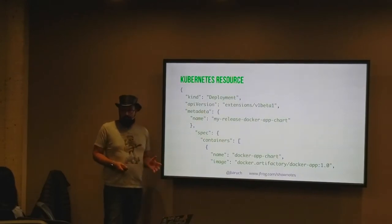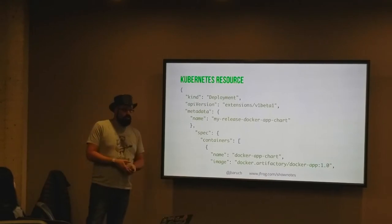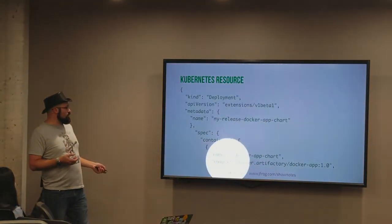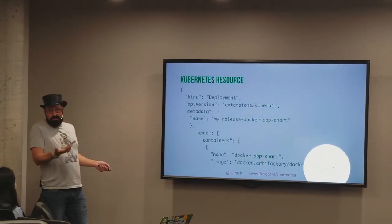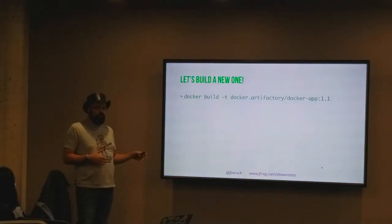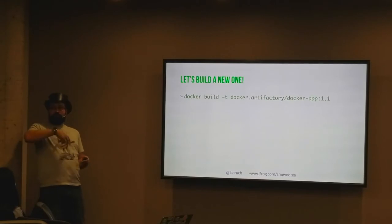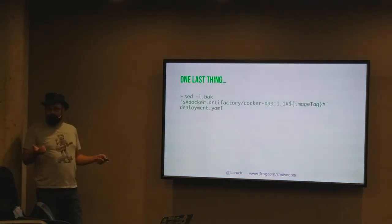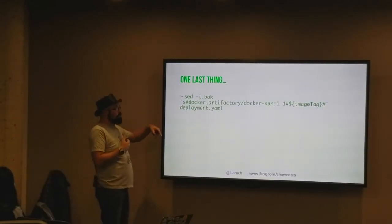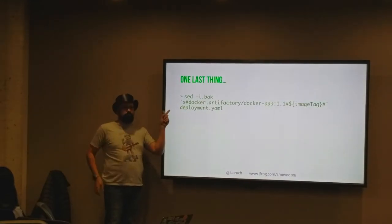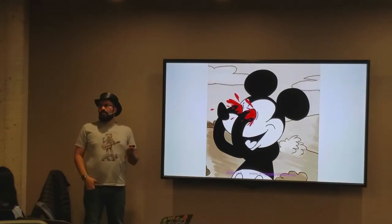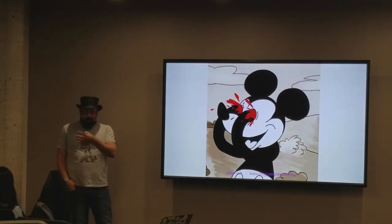There's another issue: when you define a resource, a service, you have to name an image by its tag. For example: `image: docker.artifactory/docker-app:1.0`. That's a version. When you build a new one, you run docker build and bump the version to 1.1. What do you do next? You need to manually change the version inside the YAML file. Anyone done that? What are the other options? Manual work - that's always a great option in the age of continuous automation pipelines.